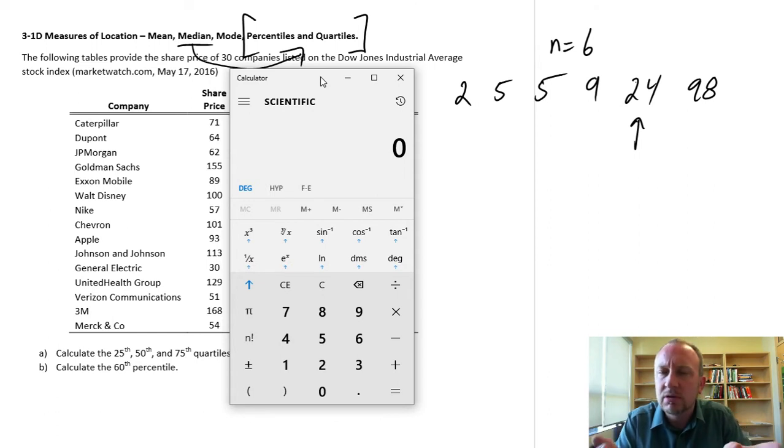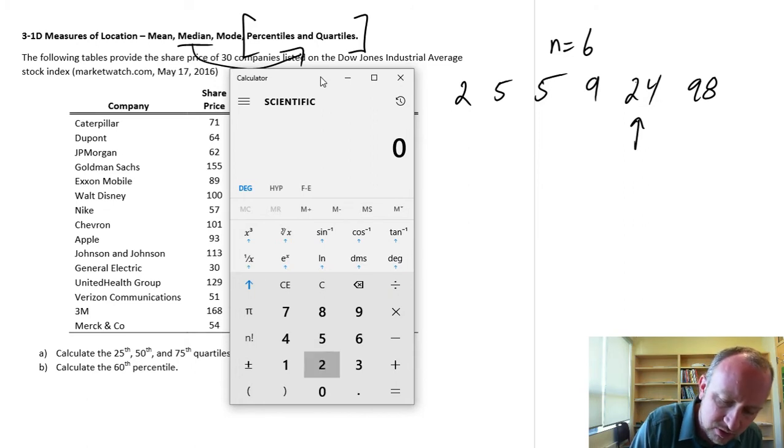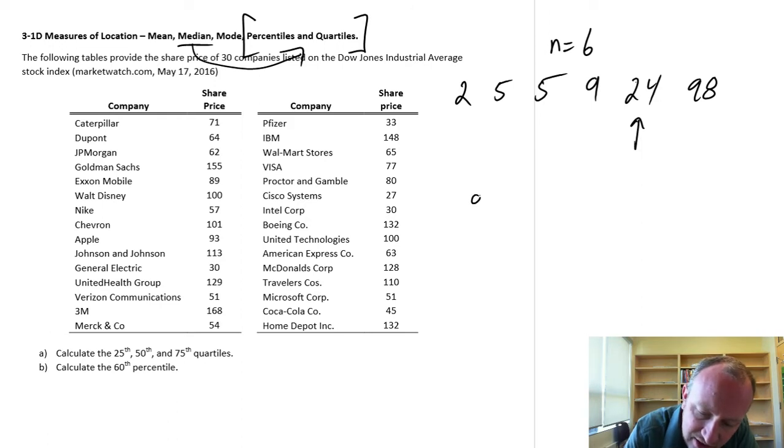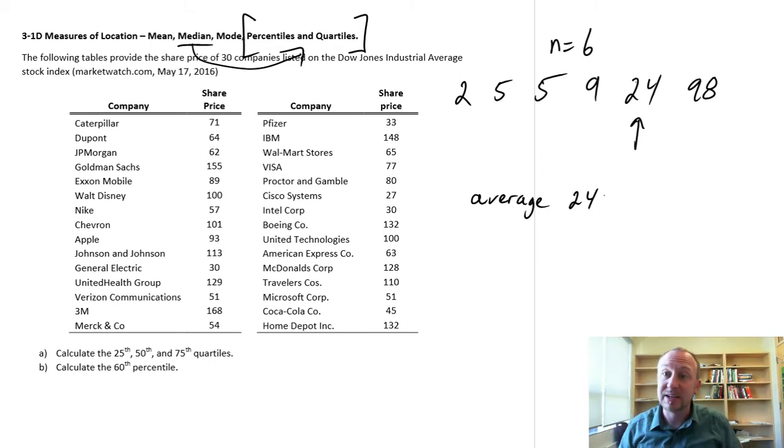So what's the average? So we add up all of our observations and we divide it by the number of observations that we have. So 2 plus 5 plus 5 plus 9 plus 24 plus 98 divided by, I have 6 observations. Oh, look at that. 23.8 is my average. So let's just round that up and say my average in this class, the average grade was actually 24. So now maybe the student feels a little bit better. Because having gotten a grade of 24 is not that great. But oh, man, everybody did poorly.